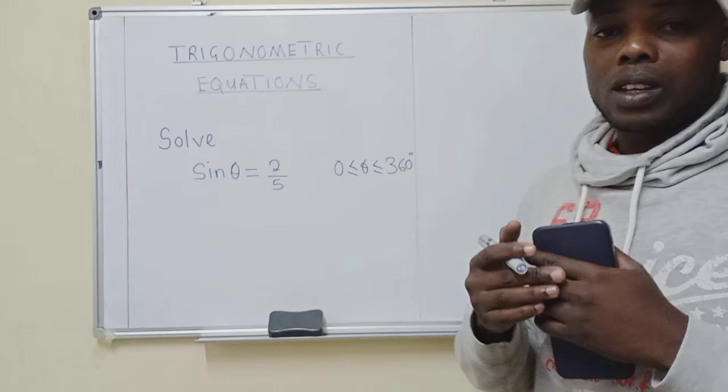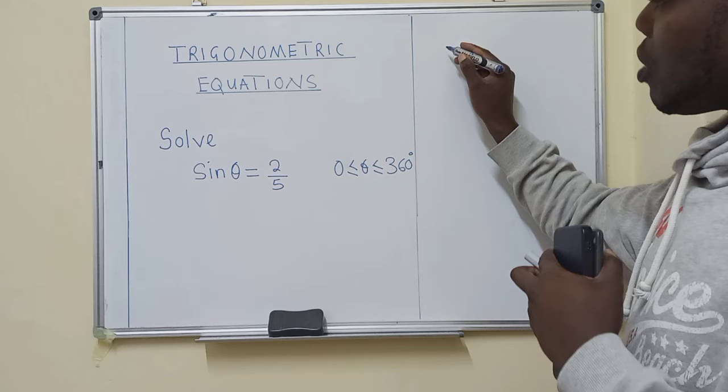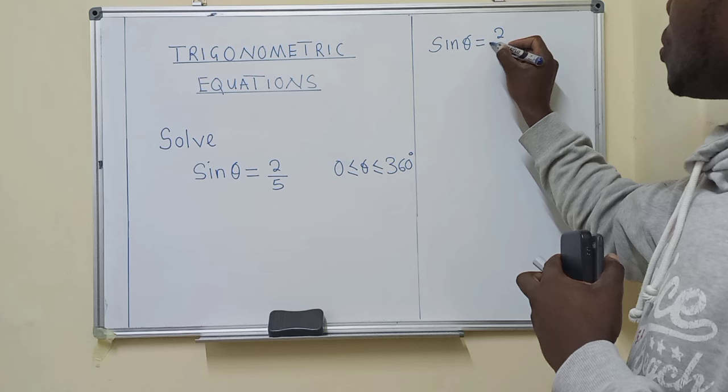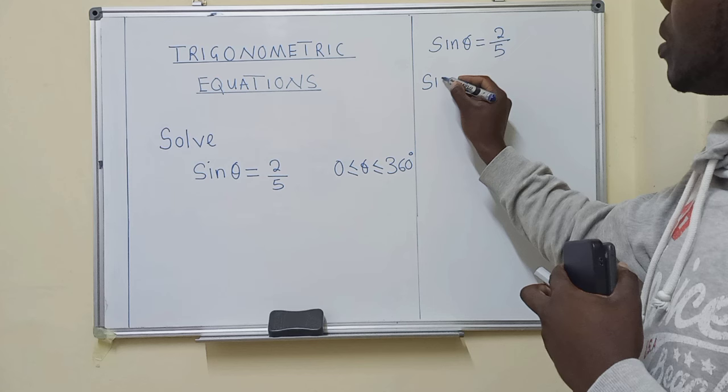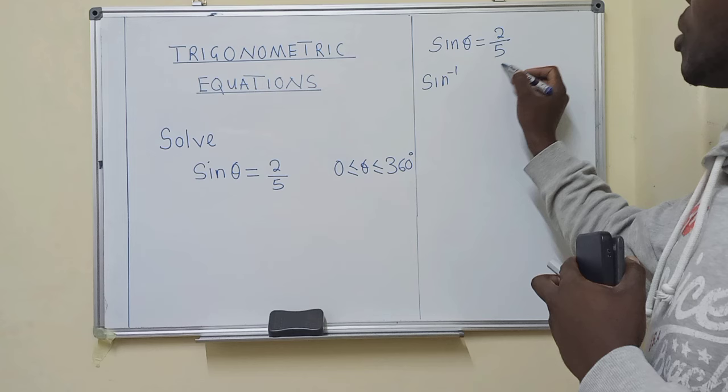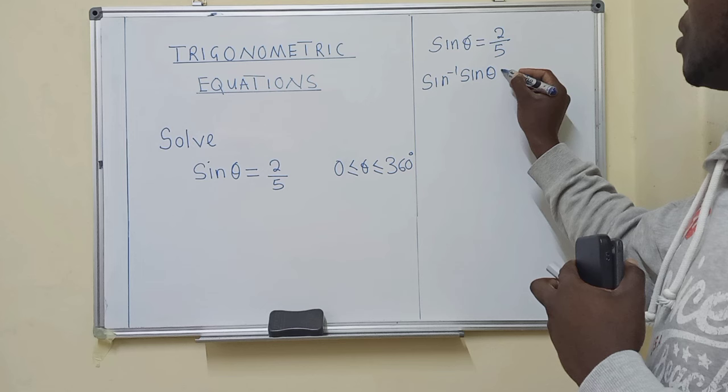You get the given equation, which is sine theta equals 2 over 5. So thereafter, apply sine inverse to both sides of the equation. What you do on this side must also be done on the other side. So you apply sine inverse to both sides.